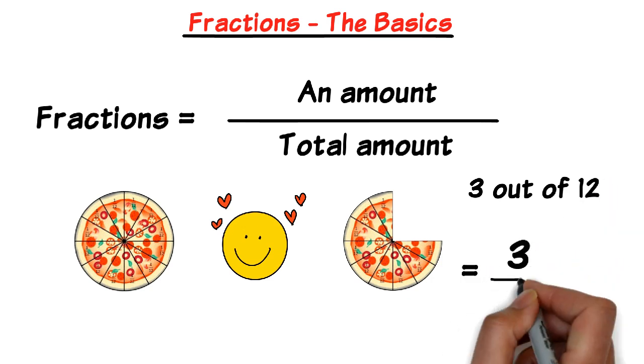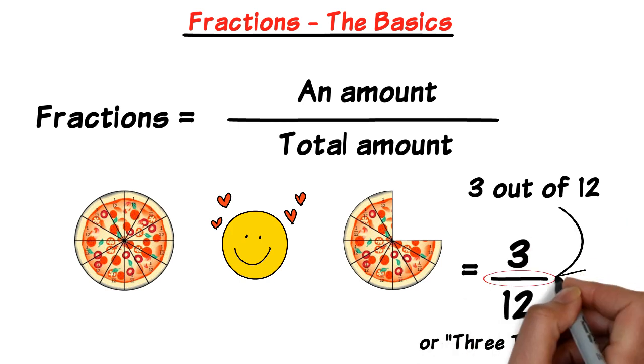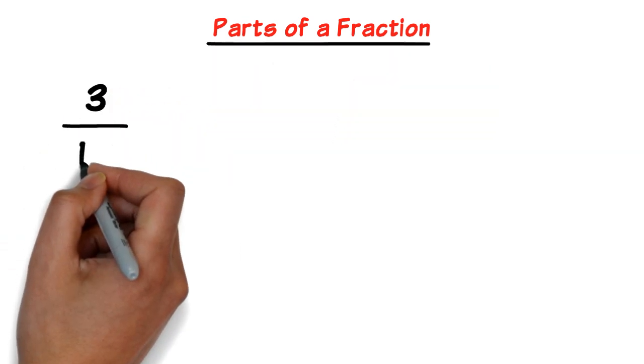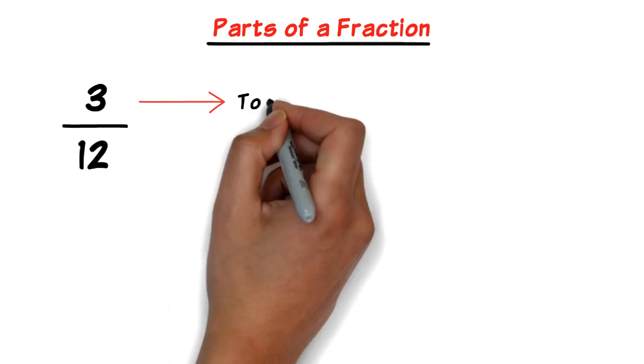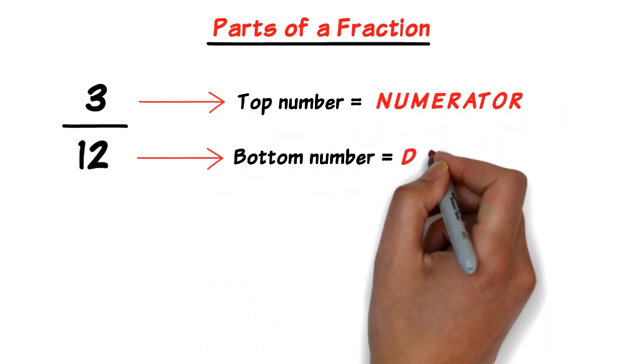This can be represented as 3 out of 12 or 3 over 12. That line means out of or you can also say over or divided by. And we'll come back to this shortly. But let's take a closer look at this representation. Now as we can see, this is now a fraction and there are two parts to it. There is a top part with a top number which is called the numerator and a bottom number which is called the denominator.